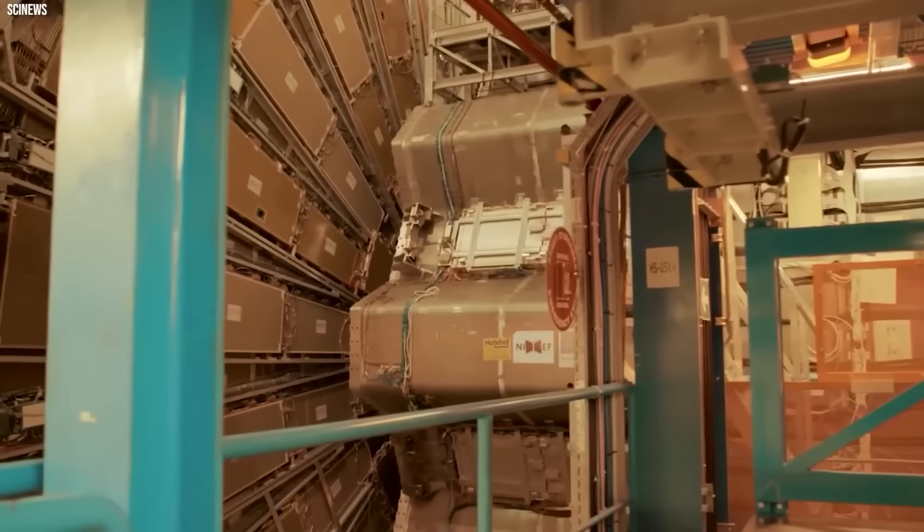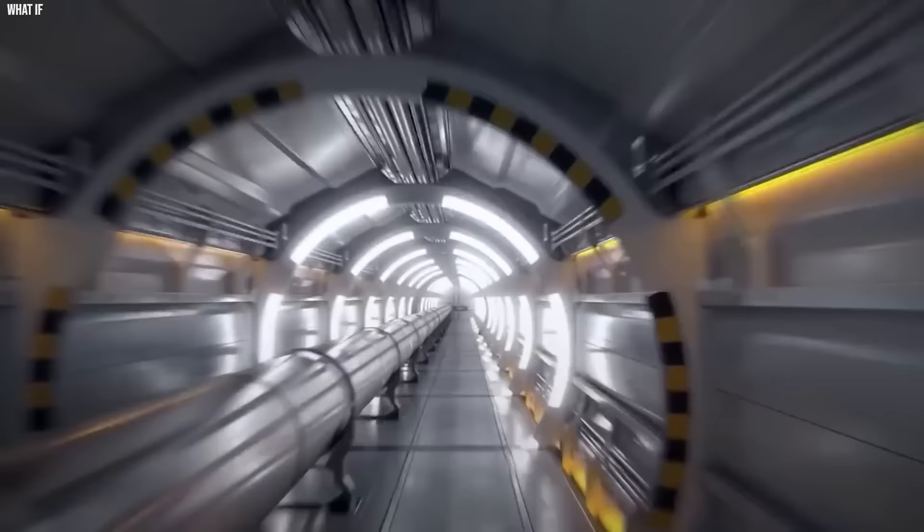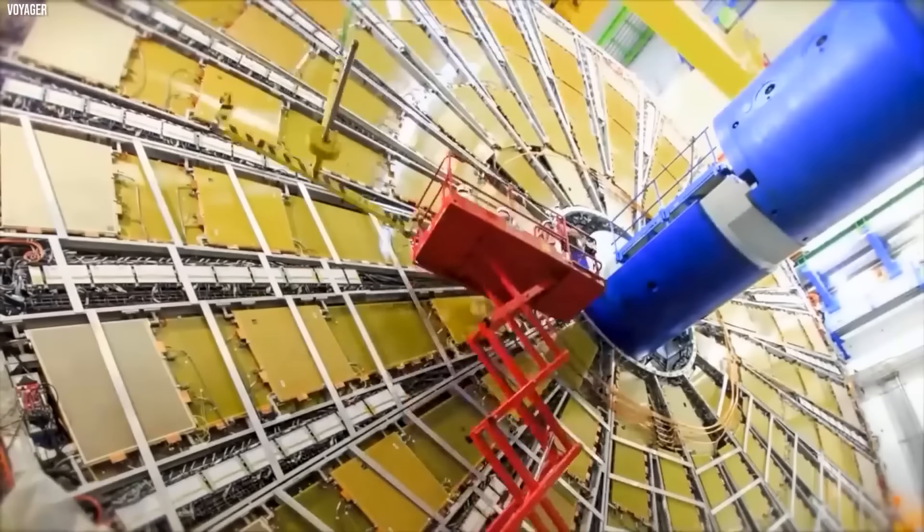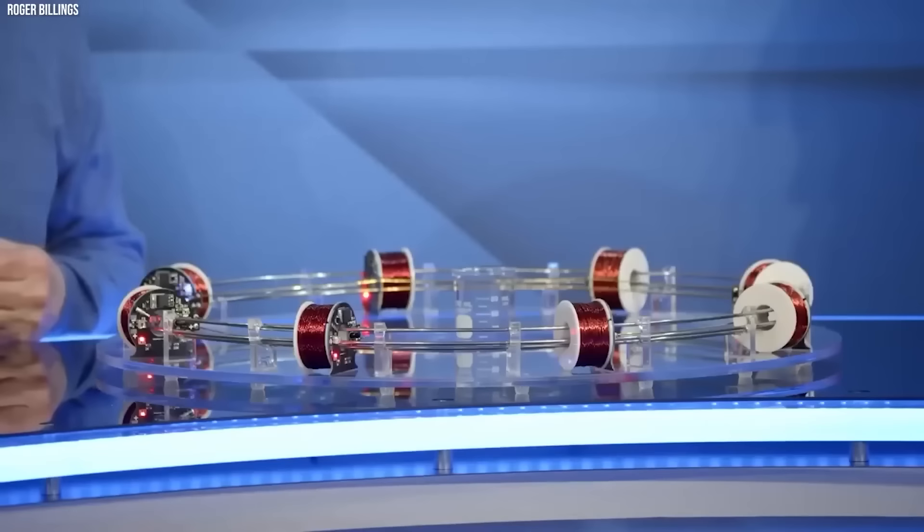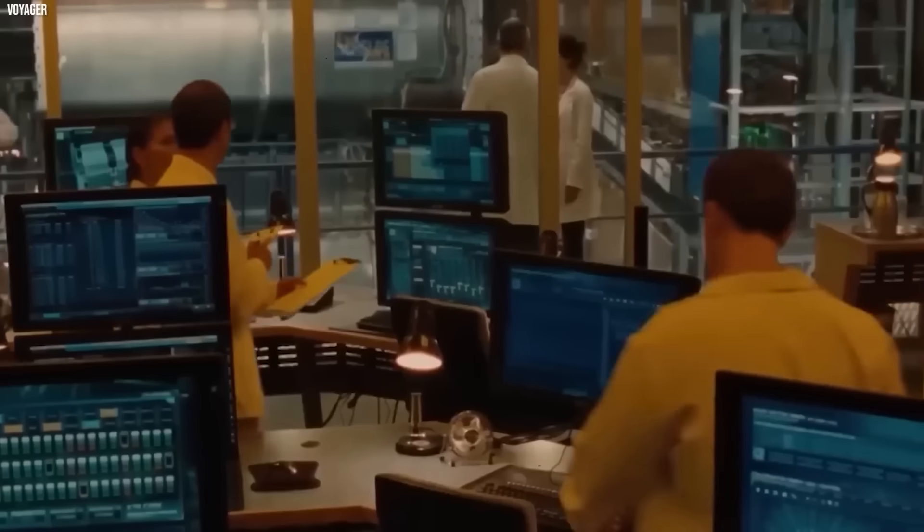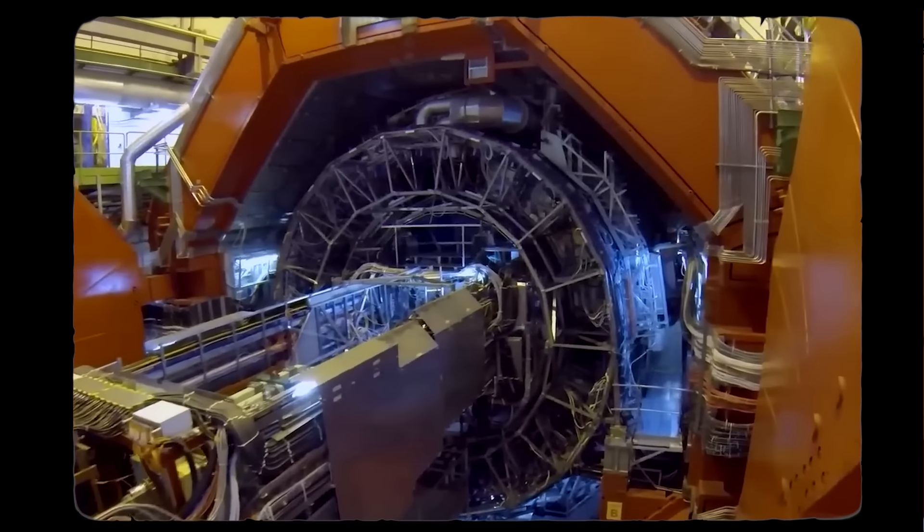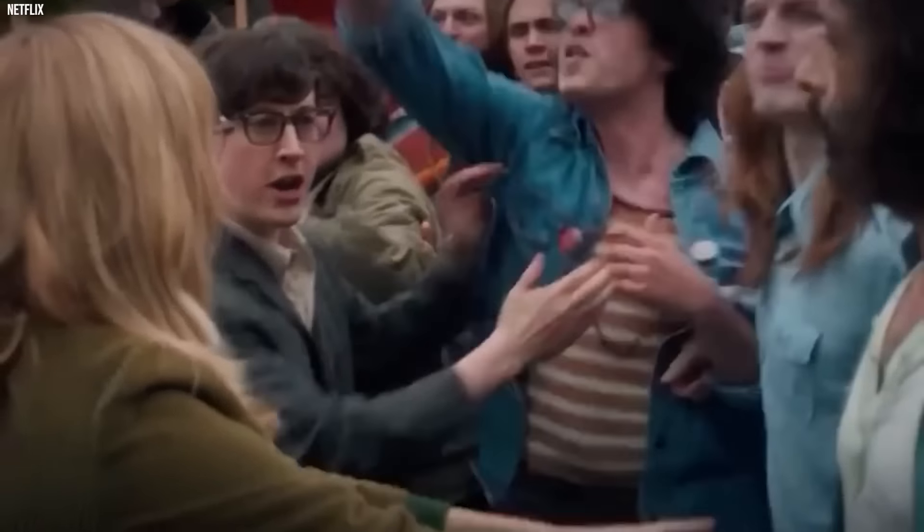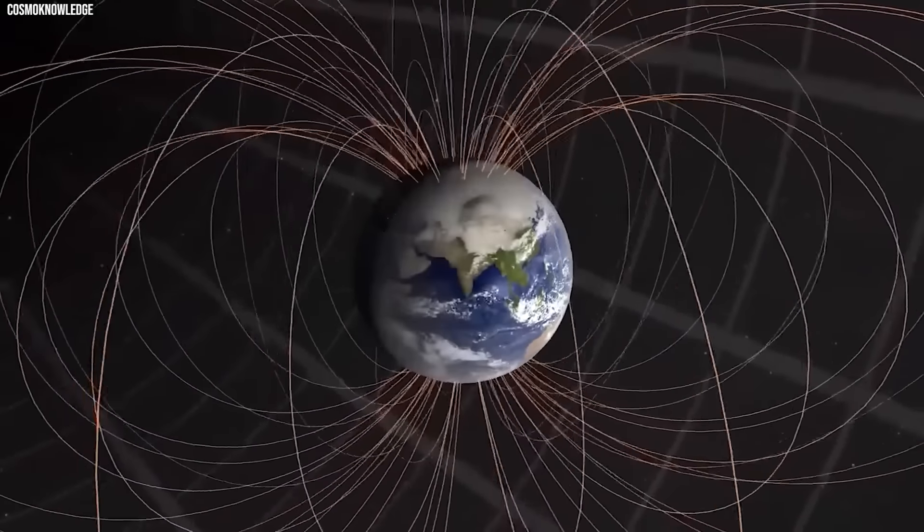This extensive LHC accelerates various particles around a loop until they reach speeds near that of light, completing over 11,000 laps per second. Achieving this feat involves using highly powerful electromagnetics to create a magnetic field within the accelerator, surpassing the Earth's magnetic field by over 100,000 times. However, not everyone is a fan of science, especially when it involves controversial experiments like those at CERN. Concerns have been raised about the potential effects of such a strong magnetic field on local electronics, and even the Earth's magnetic field. Let's hope these concerns are unfounded.